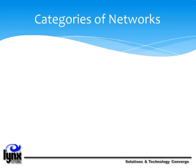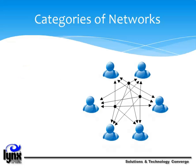Let's briefly discuss the categories of networks. Networks can be divided into two main categories: peer-to-peer and server-based. In peer-to-peer networking, there are no dedicated servers or hierarchy among the computers. All of the computers are equal and therefore known as peers. Normally, each computer serves as a client-server and there is no one assigned to be an administrator responsible for the entire network. Peer-to-peer networks are good choices for small organizations where the users are in the same general area, security is not an issue, and the organization will have limited growth within the foreseeable future.